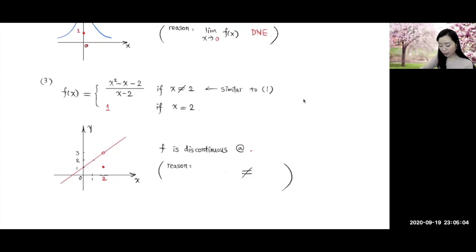Now the function is defined at 2. And the limit as x approaches 2 also exists. In fact, the limit over here is equal to 3. Equal to this 3 here.